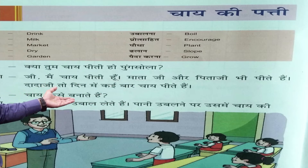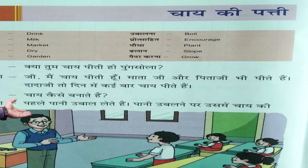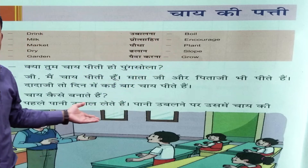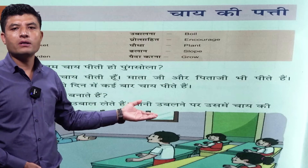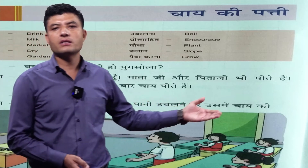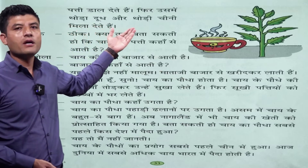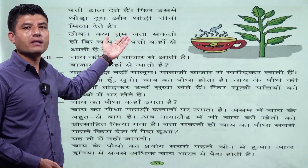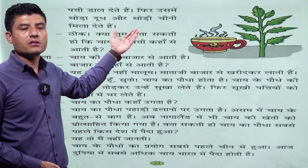Sikchak poochhte hain: 'Chai kaise banaate hain?' Toh yahan par Punsola bol rahi hai: 'Pehle paani ubaal lete hain.' Chai banaane ke liye pehle paani ubaalna padta hai — you have to boil water. Ubaalna means boil. Paani ubaalne par us mein chai ki patti — tea leaves — daal dete hain. Phir us mein thoda doodh — milk — milaate hain, aur thodi cheeni — sugar — milaate hain. We mix with milk and sugar. Yeh chai banaane ki procedure hai — process of making tea.